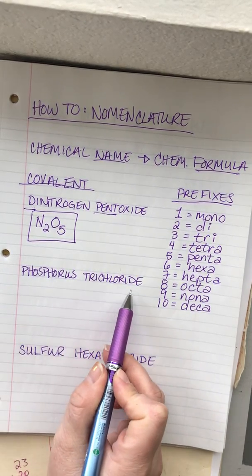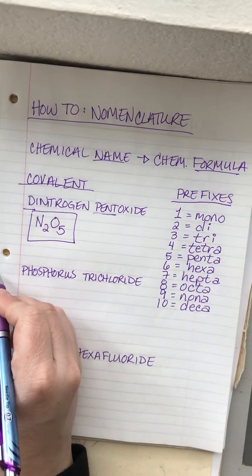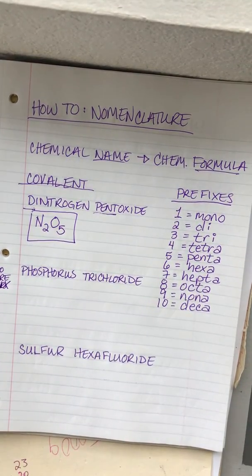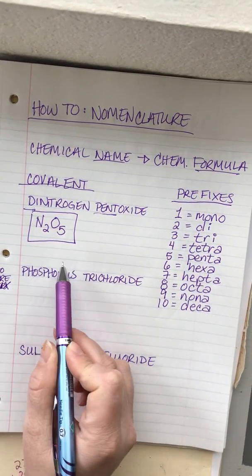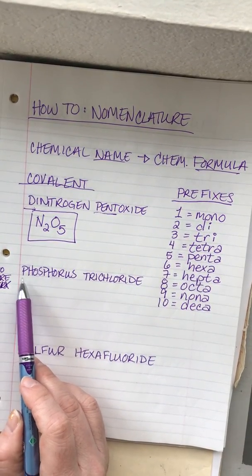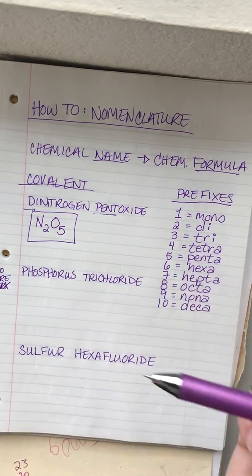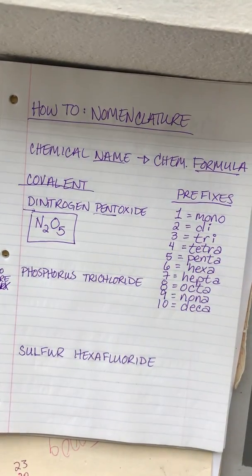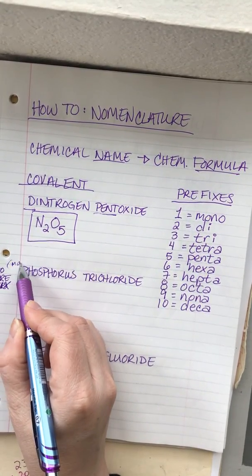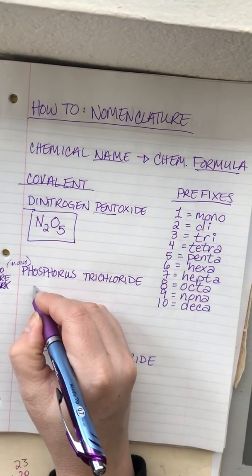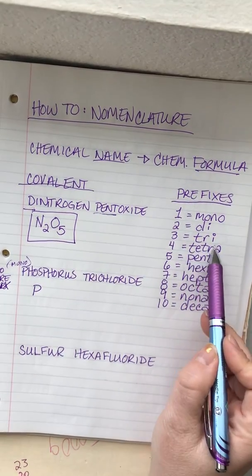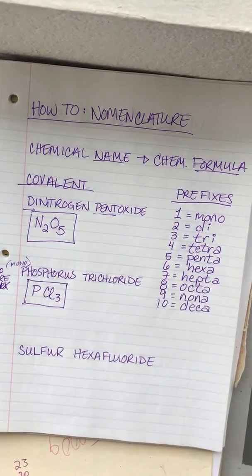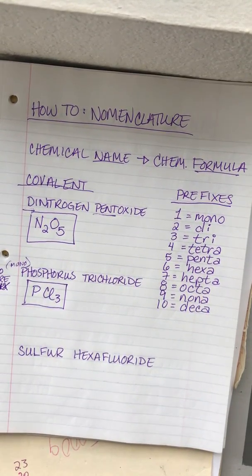Next up we have phosphorus trichloride. Notice there's no prefix out front for the first element — if there's no prefix, we know there's only one of that element. There's an implied 'mono' that we haven't written. 'Tri' means three, so we have three chlorides, giving a chemical formula of PCl₃.